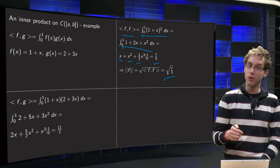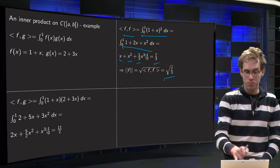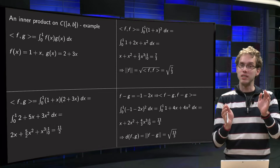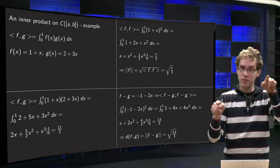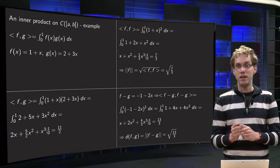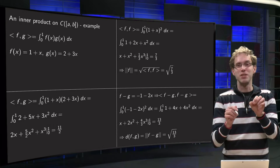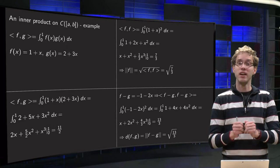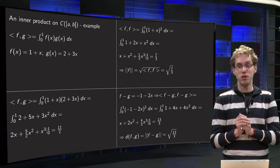And now we can go on. Now we have length, we can compute distances. Because the distance between two points is the length of the vector which is the difference of the two. So how can we define the distance between f and g? Compute f minus g and compute the length of that.